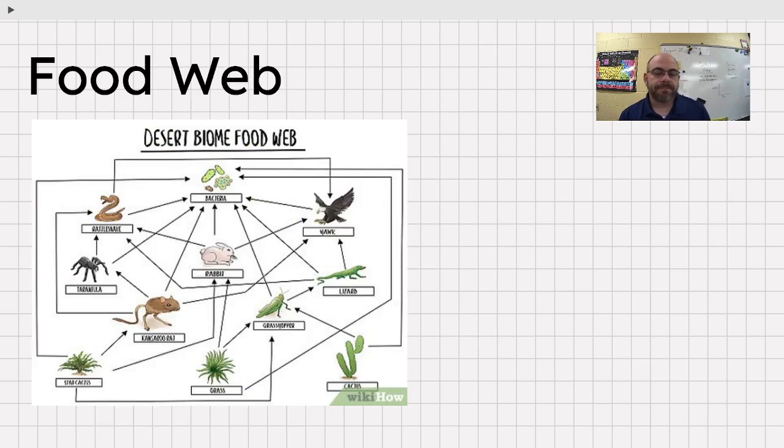So here's a food web. A food web is showing all the interactions in a community. Community represents all the living things in an ecosystem. And so this shows all the interactions. The rattlesnake is eating the rabbit, the kangaroo rat, and the tarantula. The hawk is eating the rabbit, lizard, and grasshopper. And the bacteria is eating all of it. It's the king of the desert biome food web.